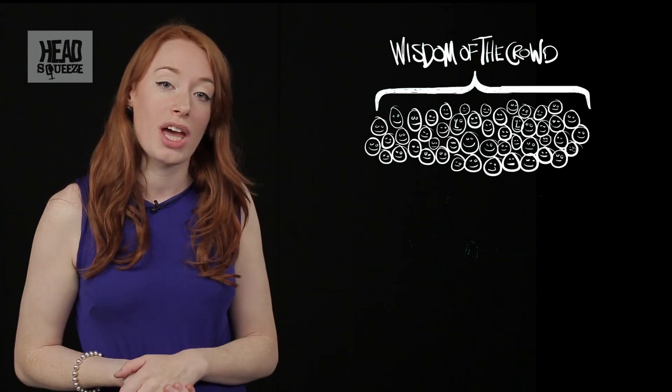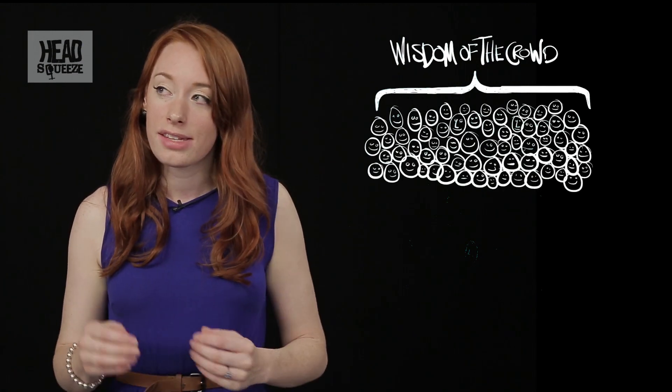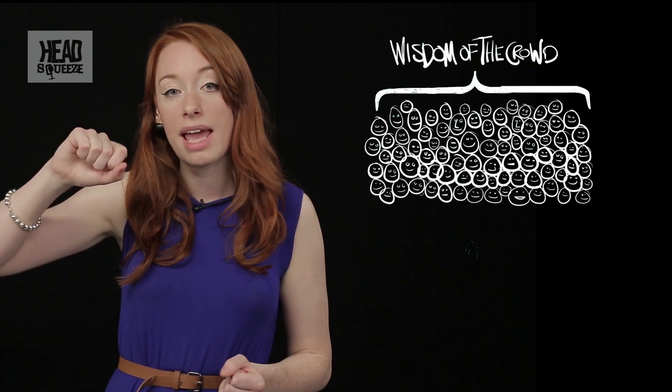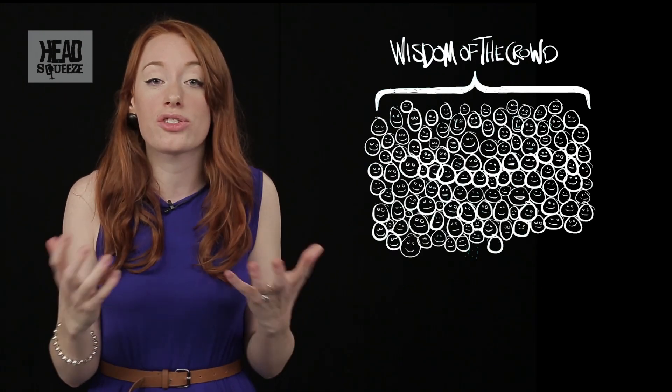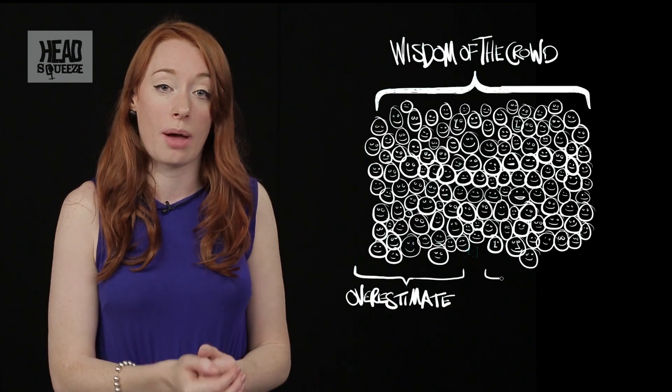Now this idea is known as the wisdom of the crowds and says that the number of people who overestimate tends to balance out the number of people who underestimate, giving a really astonishingly accurate answer that none of you could have come up with individually.